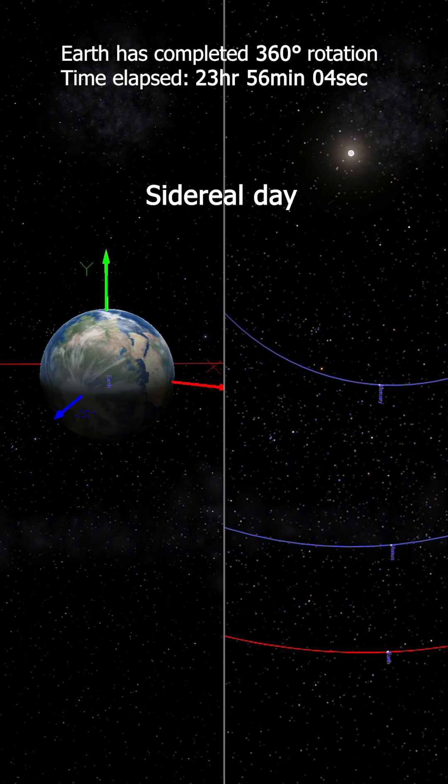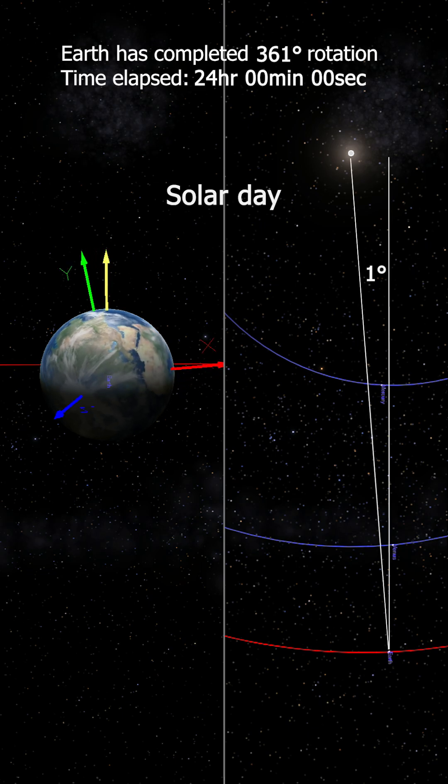To get the Sun back to the same position, the Earth needs to rotate approximately four more minutes. Therefore, a solar day is about four minutes longer than a sidereal day.